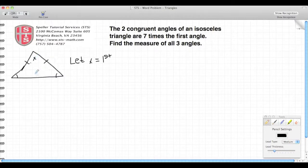So in that case, I have an x up here. And it also states that the other two angles are seven times that first angle. So that means the other two angles have to be 7x.